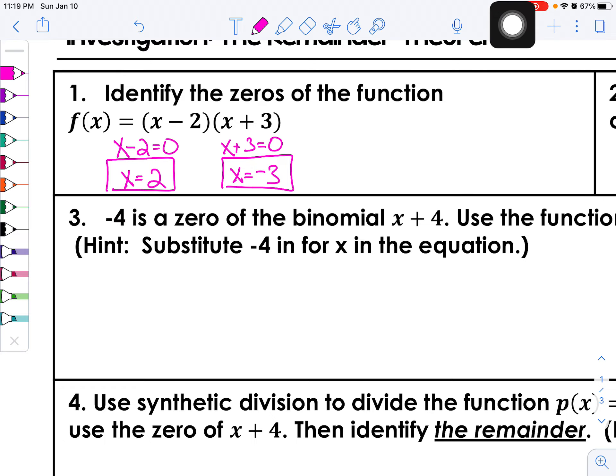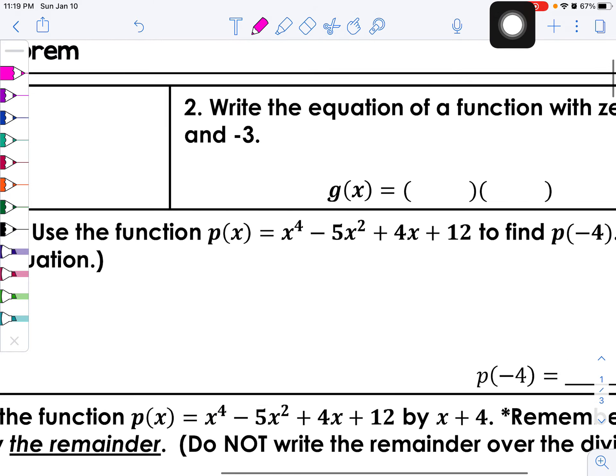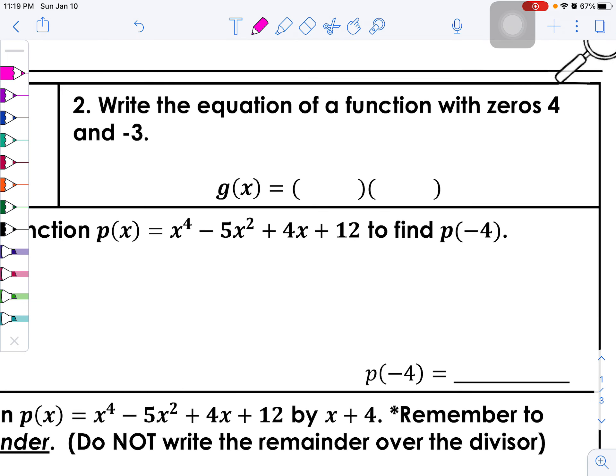Okay, number two: write the equation of a function with zeros 4 and negative 3. Now this 4 is a positive 4, which means when I write its factor I'm going to have x minus 4. And this is a zero that's negative, so when I write its factor I'm going to do x plus 3.